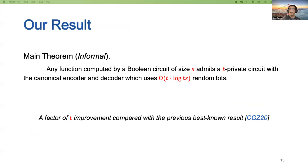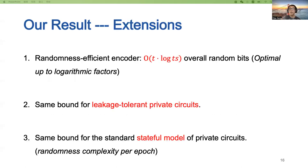In this work, we show that any function computed by a Boolean circuit of size S admits a T-private circuit with a canonical encoder and decoder which uses O(T·log T) random bits. This represents a factor-of-T improvement compared to the previously best-known results. We also extend our results: when using a random sufficient encoder instead of the canonical encoder, we achieve O(T·log T) overall random bits, which is optimal up to logarithmic factors. The same bound applies for leakage-tolerant private circuits and for the stateful model, where the randomness complexity is per epoch.